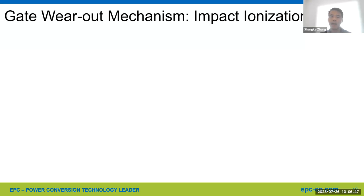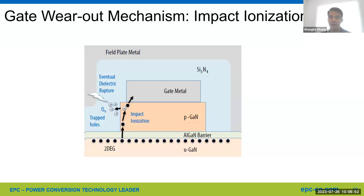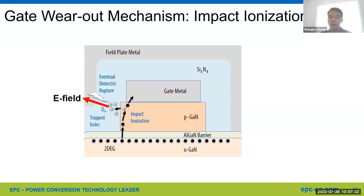We are going to use the impact ionization process to explain the failure mechanism. In the first step, electrons are injected into the p-GaN gate layer from the two-DEG over the aluminum gallium nitride barrier layer. In the second step, electrons enter the p-GaN gate and are accelerated rapidly by the electric field, with some gaining sufficient energy to cause impact ionization and generate holes. In the final step, holes move away from the gate corner under the electric field and become trapped in the silicon nitride dielectric, leading to growing positive trapped charges QH. Once this charge density reaches a critical density, the dielectric ruptures, causing the catastrophic failure mode at the gate corner.